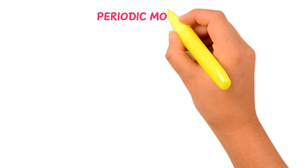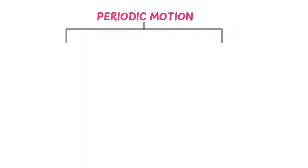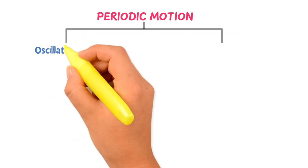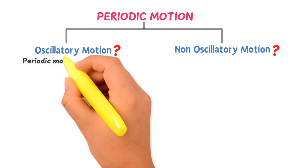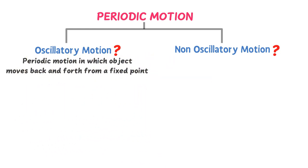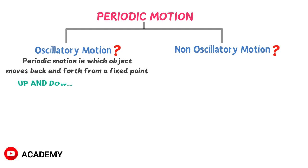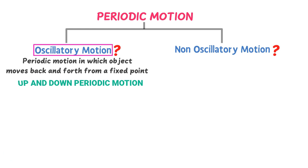Periodic motion is further divided into two types: oscillatory motion and non-oscillatory motion. Oscillatory motion is periodic motion in which an object moves back and forth or up and down from a fixed point. Simply put, up and down or back and forth periodic motion is called oscillatory motion.